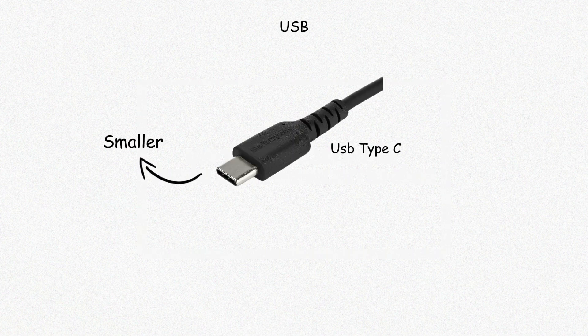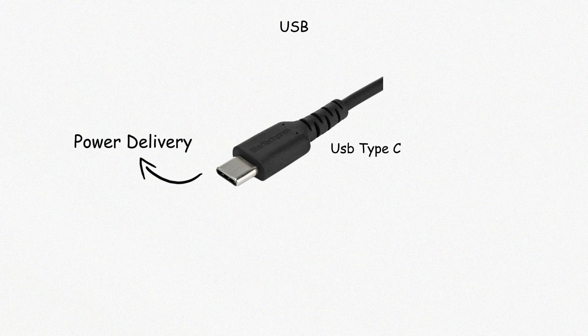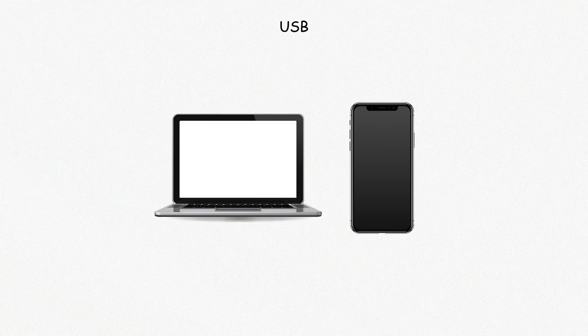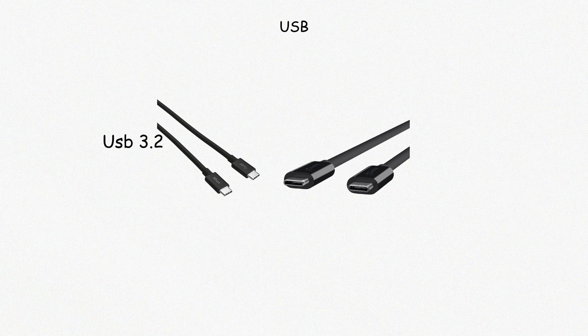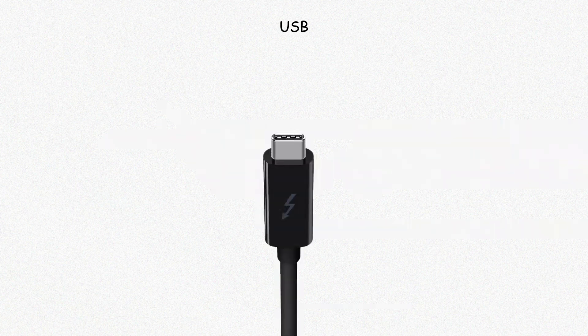USB Type-C is smaller, oval-shaped, and reversible. It handles data transfer, video output, and power delivery all at once. Many modern laptops and phones use USB-C instead of traditional power or video ports. When paired with USB 3.2 or USB 4, it can support up to 40 gigabits per second. Some USB-C ports also support Thunderbolt, which expands capability further.